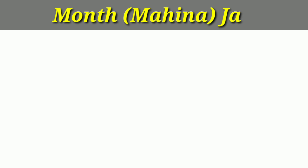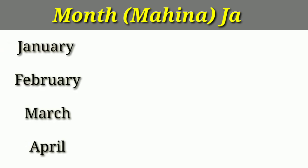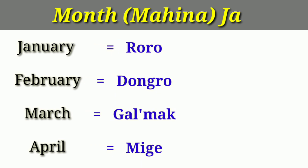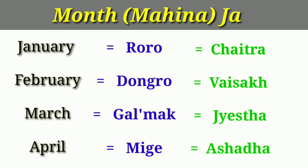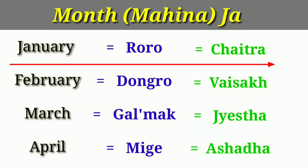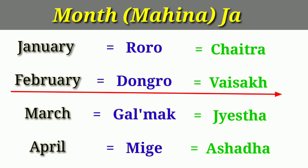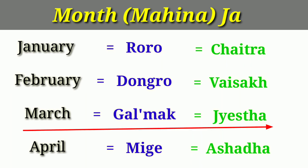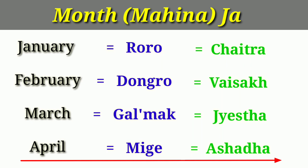Now representing months — Mohina. Let's see January, February, March, April in local language and Hindi. January: Roro — Chetra. February: Dungro — Vaishak. March: Galmati — Jaystha. April: Migue — Aashar.